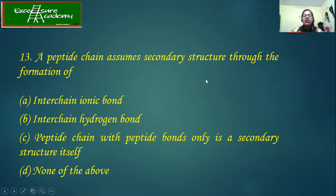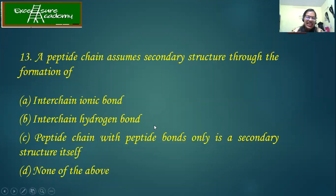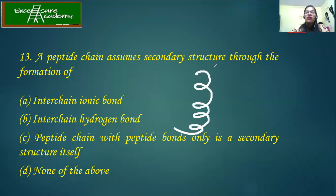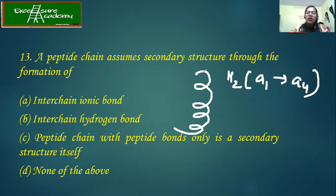A peptide chain assumes secondary structure through the formation of what? Options: interchain ionic bonds, hydrogen bonds, peptide chain with peptide bonds only as secondary structure, or none of the above. Option C doesn't make sense. We have studied that secondary structures — alpha helices and beta sheets — are formed with hydrogen bonds. To form a secondary structure you need intra-chain hydrogen bonds. For example, in alpha helices the hydrogen bond is formed between amino acid one and amino acid four.